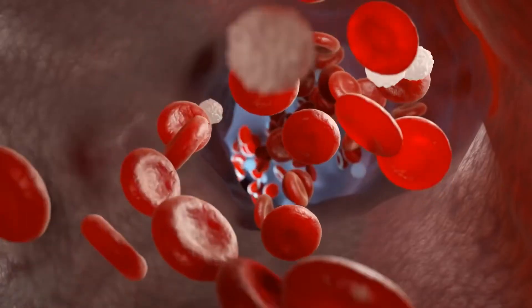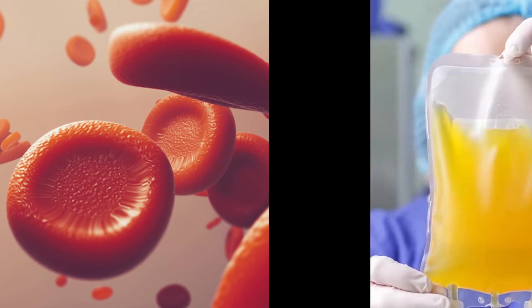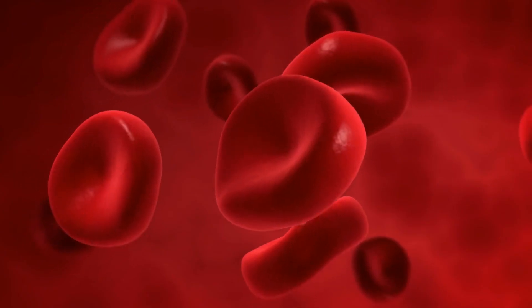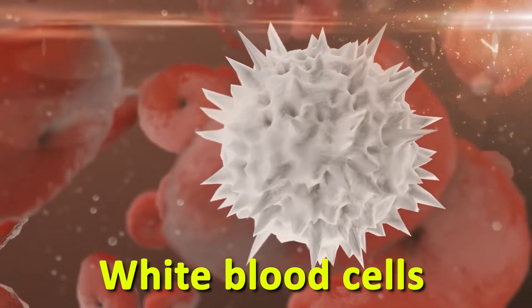Human blood can be divided into two parts: the solid part and the liquid part. The solid part of your blood is red blood cells, white blood cells, and platelets.